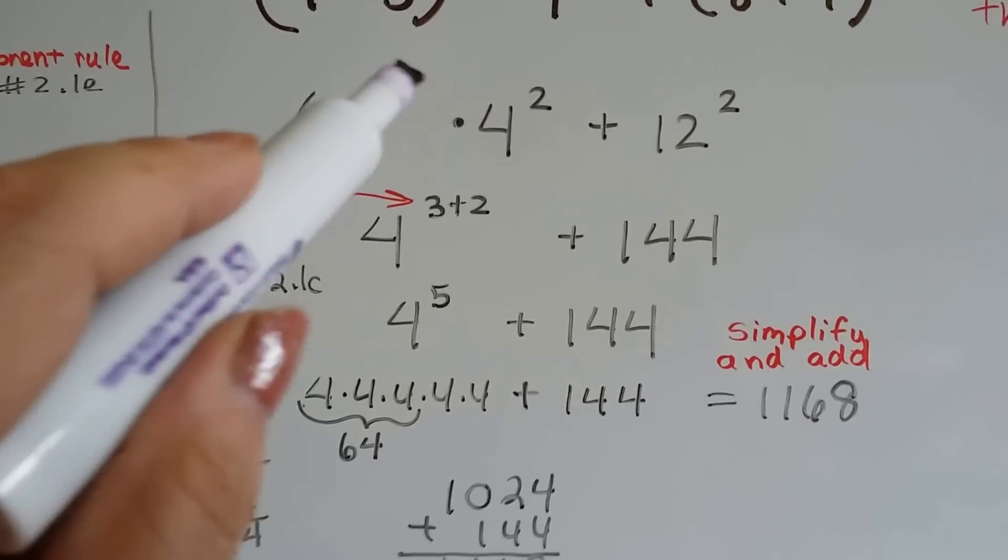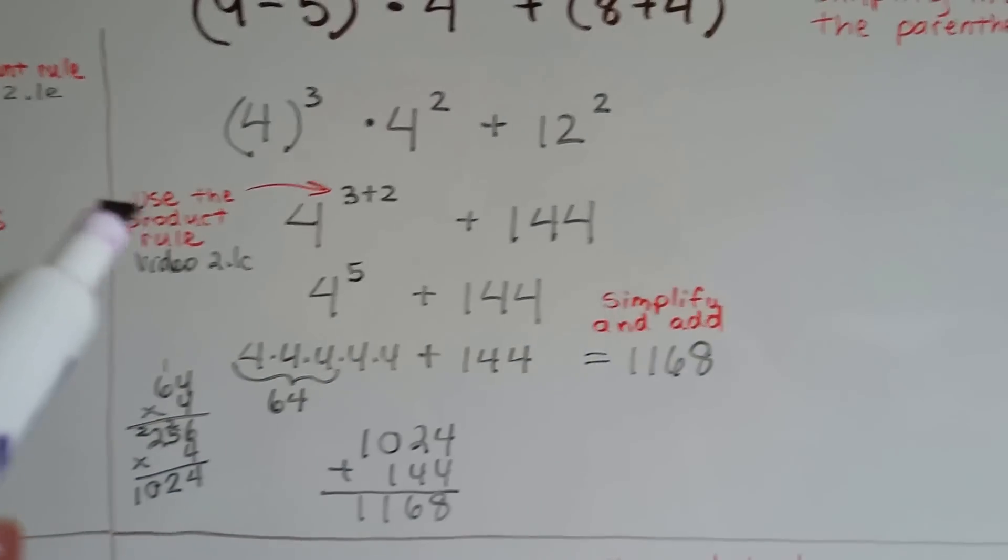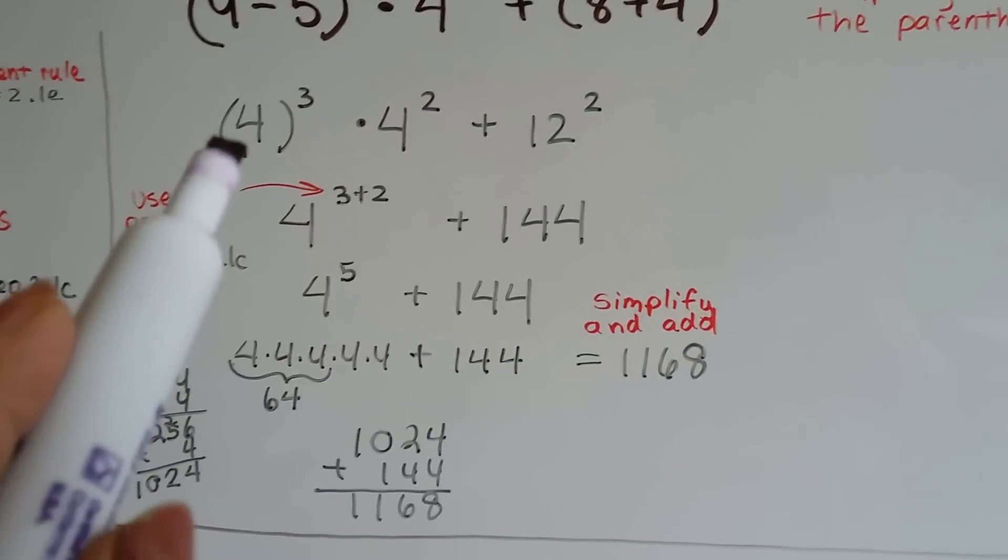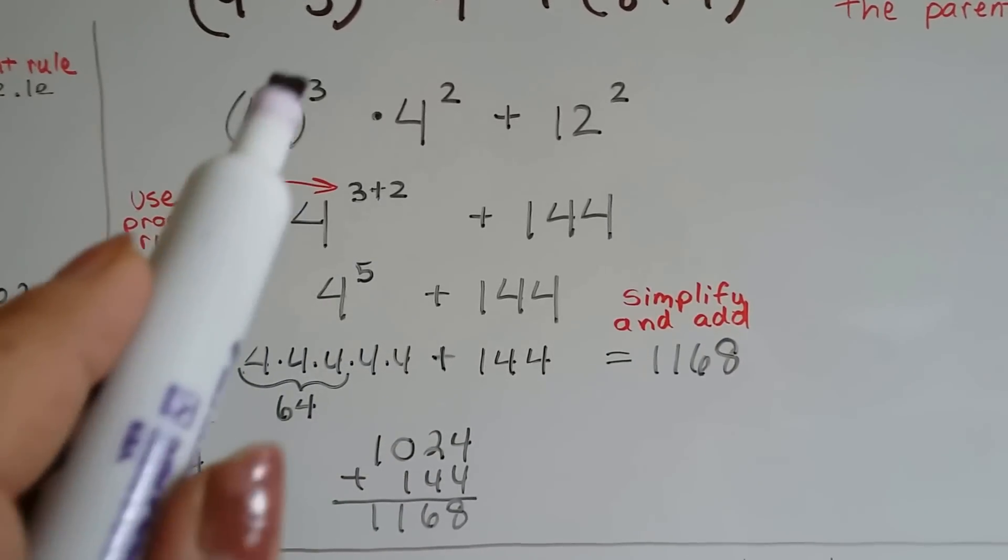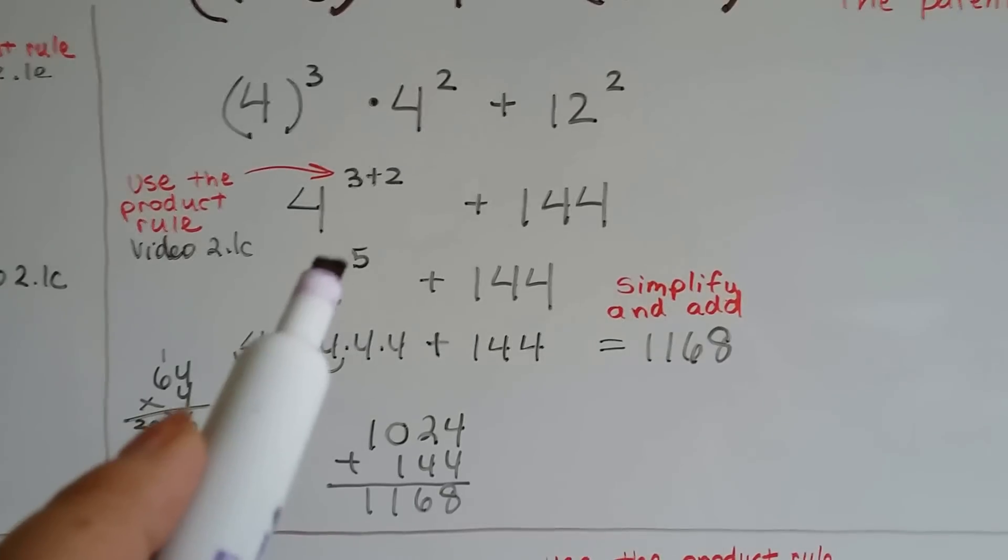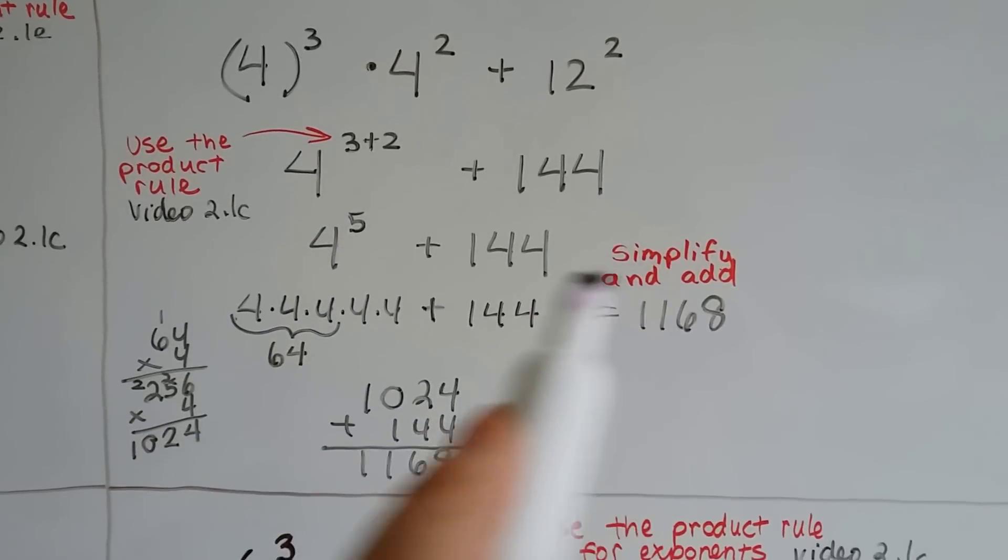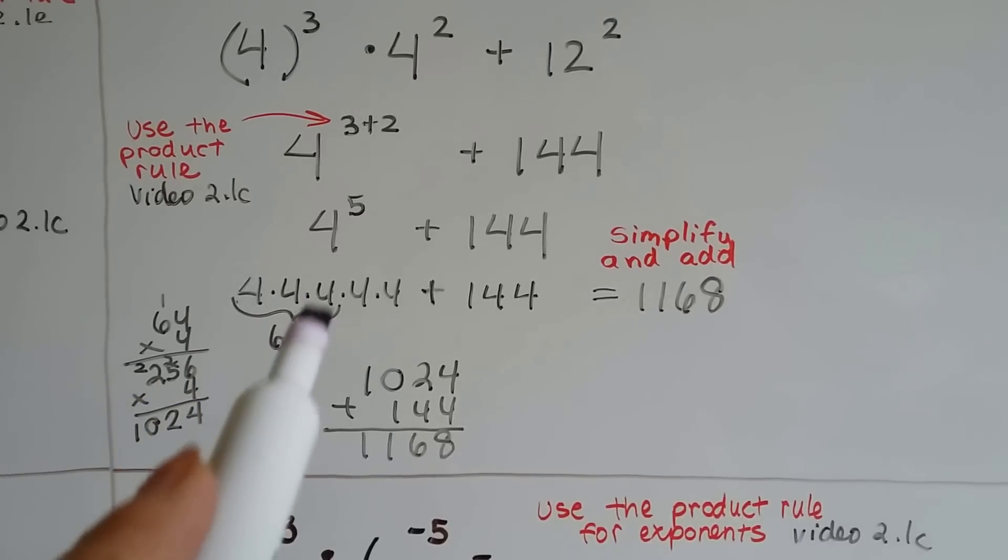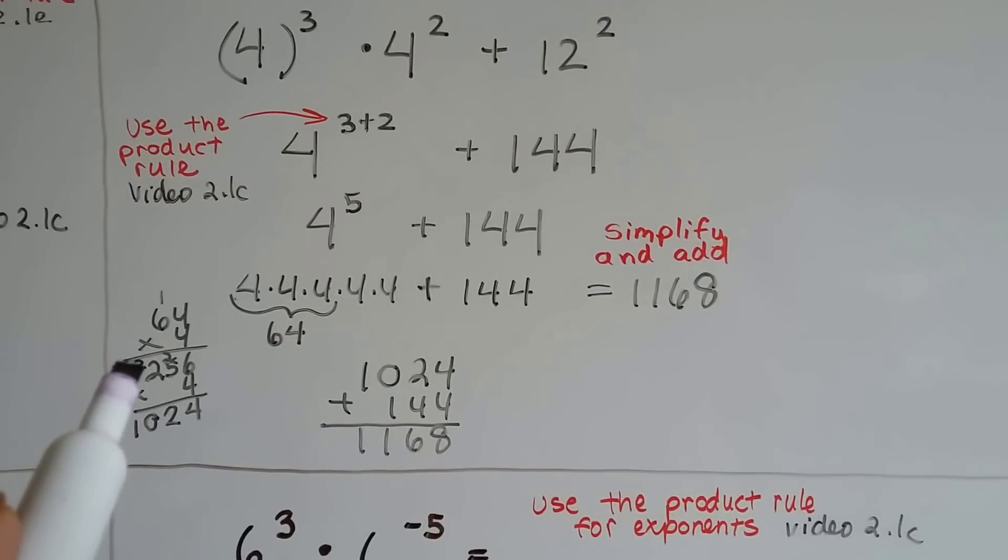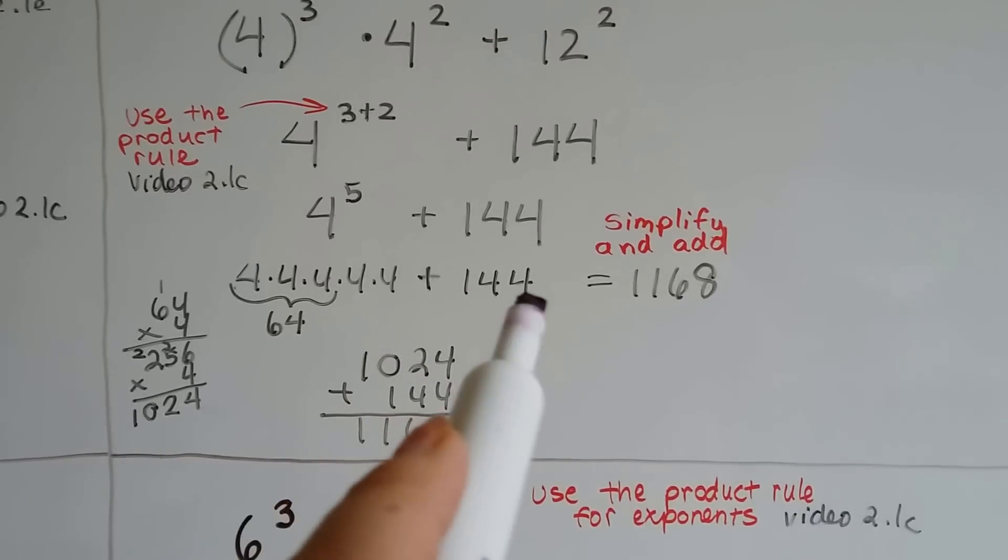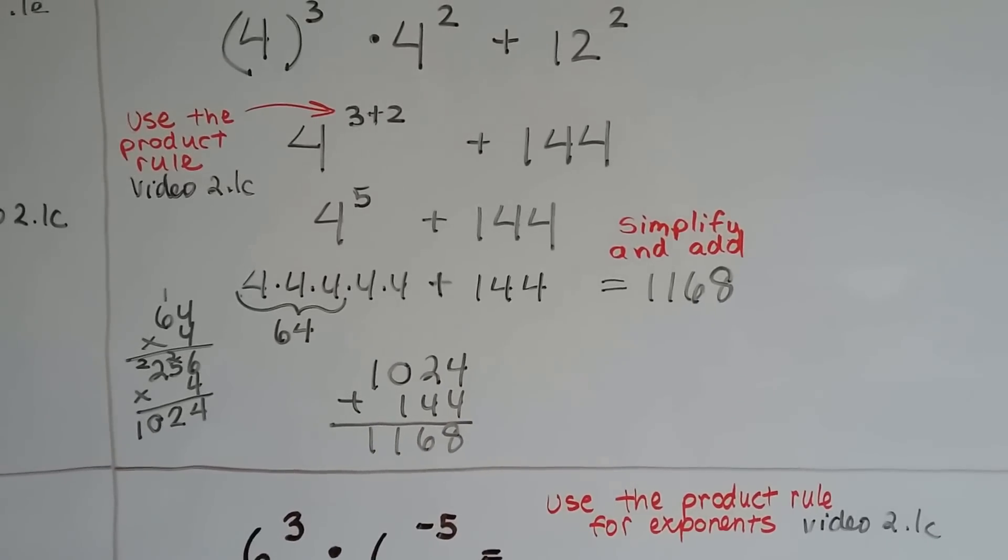So now we've got 4 to the 3rd power times 4 to the 2nd power. Well, if you saw the product rule, video number 2.1c, you know that since these two bases are the same, all we have to do is add their exponents, 3 plus 2. That's going to give us a 5. Now we've got 4 to the 5th power. All we have to do is simplify and add it. 4 times 4 times 4 is 64 times 4 is 256 times 4 is 1,024. Now we add the 144 and we get 1,168. No big deal.